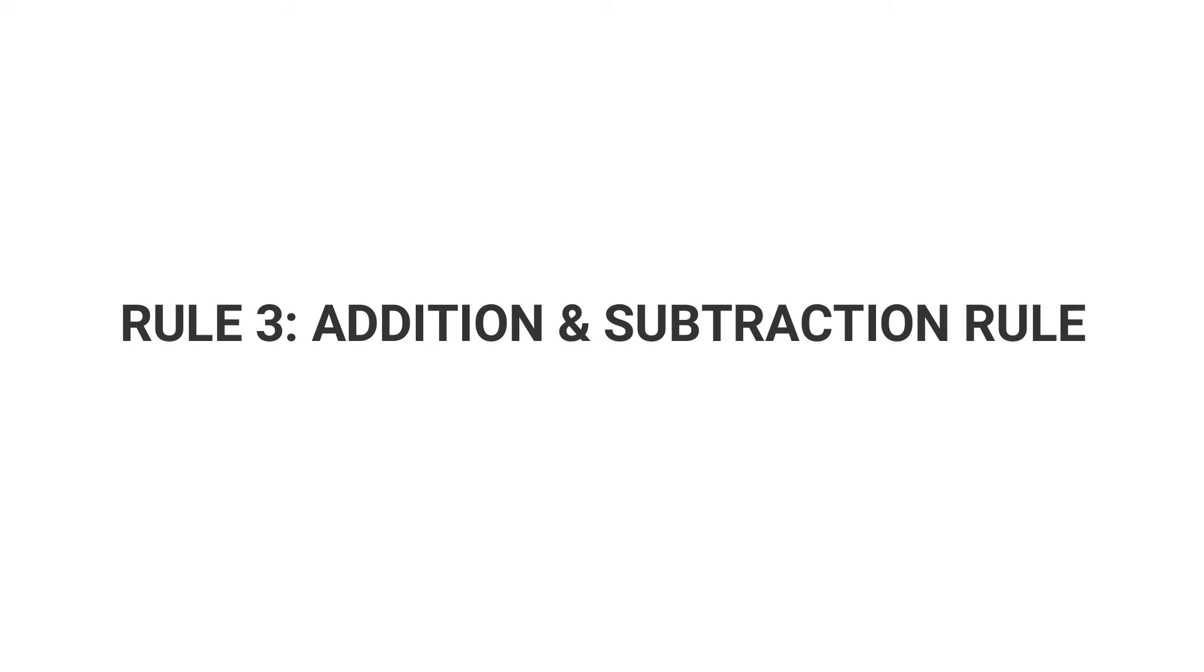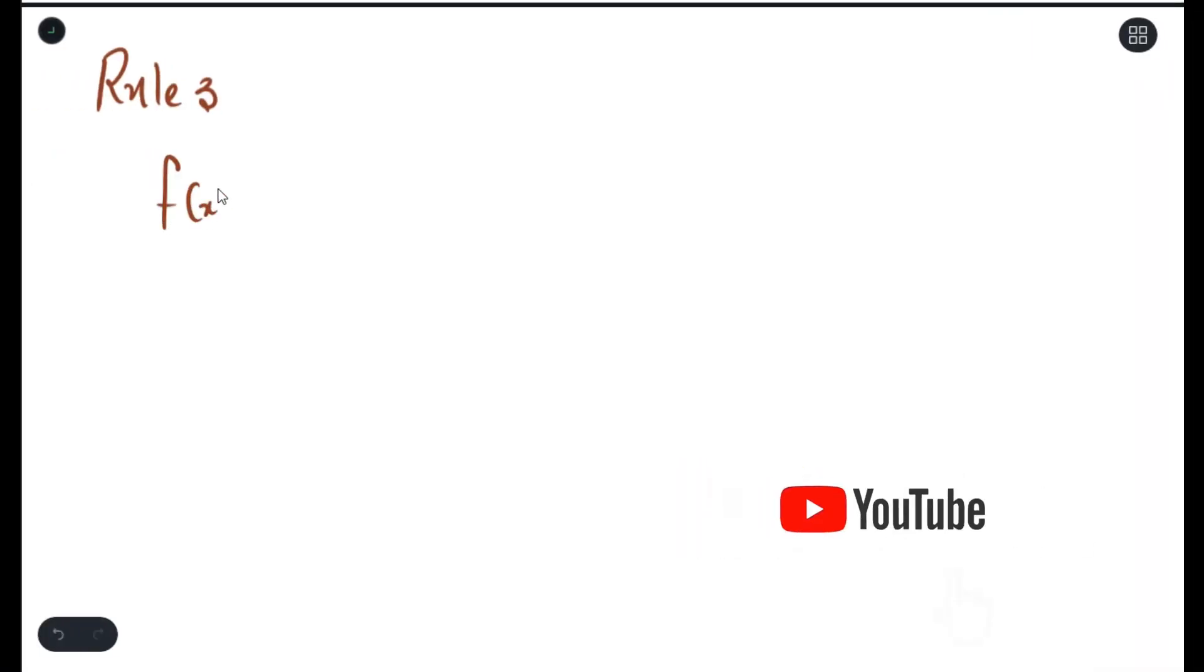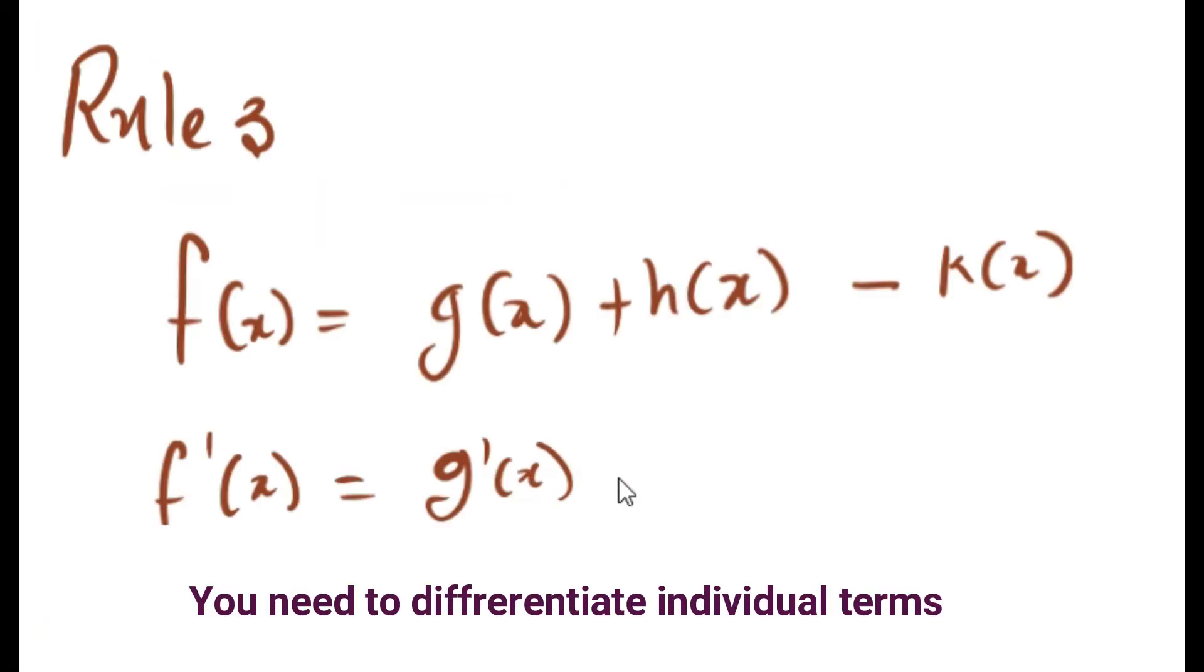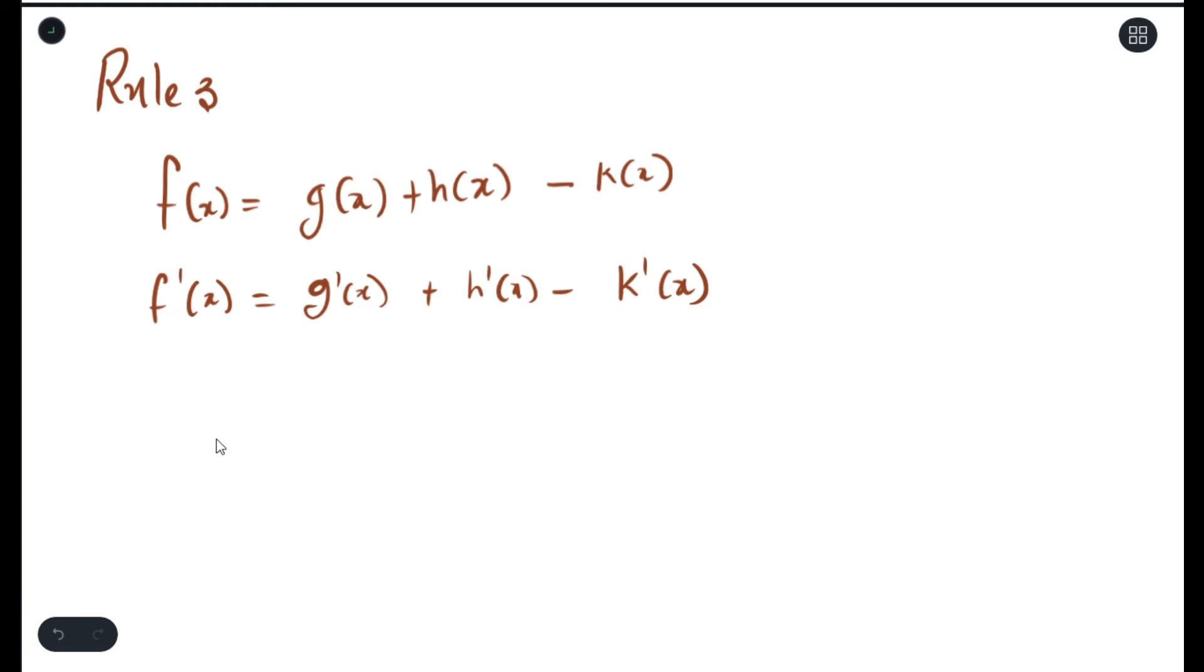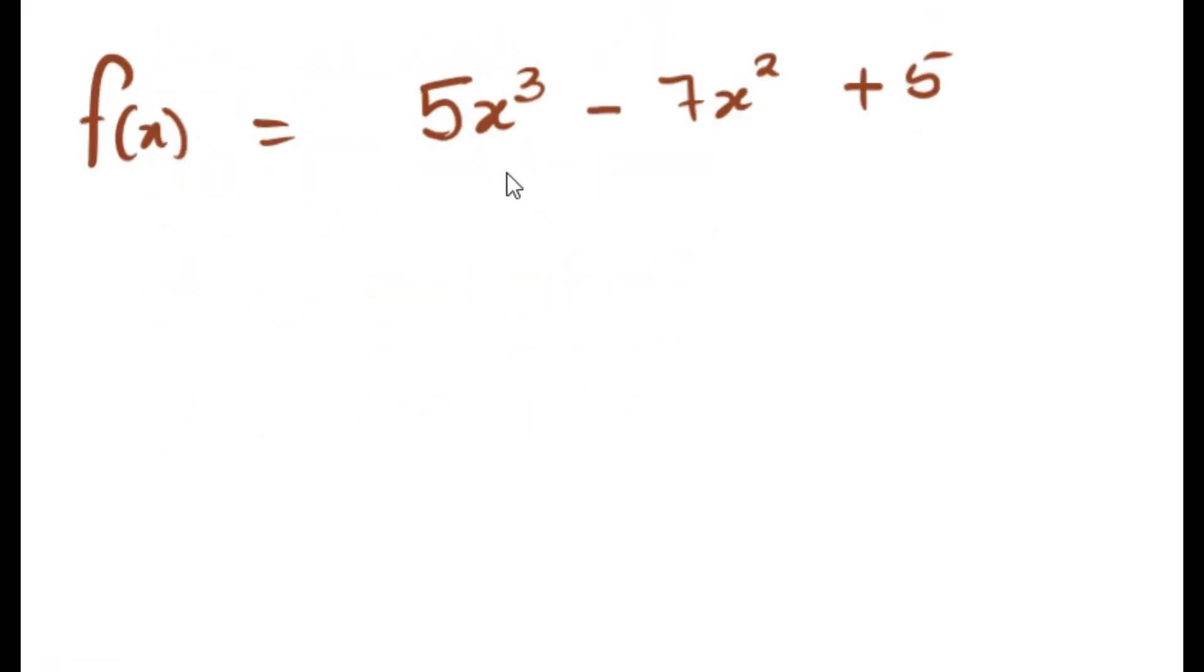Whenever you have an addition of different functions, it could also be addition and subtraction of different functions, we normally say that the derivative is you differentiating them individually. What I mean by that is, let's try an example. We have this function. To find this, we need to derive each and every one individually. For the first one, when you multiply the coefficient with your power you would get 15, and you subtract 1 from your exponent you would get 2.